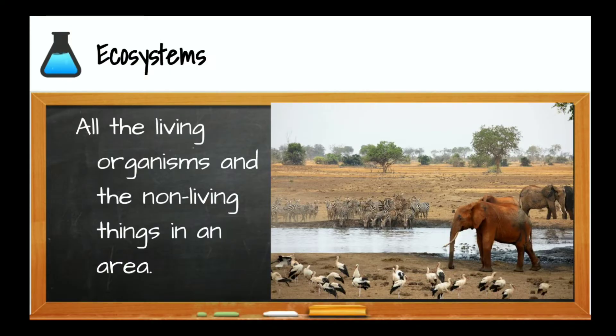An ecosystem are all the organisms or living things and non-living things in an area that interact. So here you can see that we have various animals, we have plants, water, air. All of these items make a part of this ecosystem.